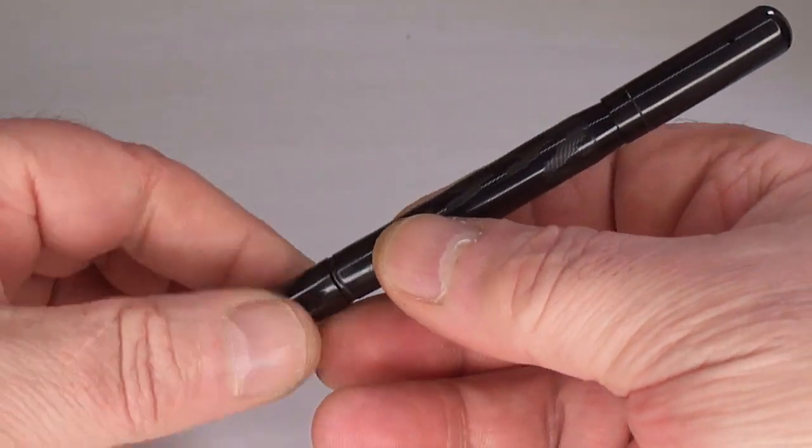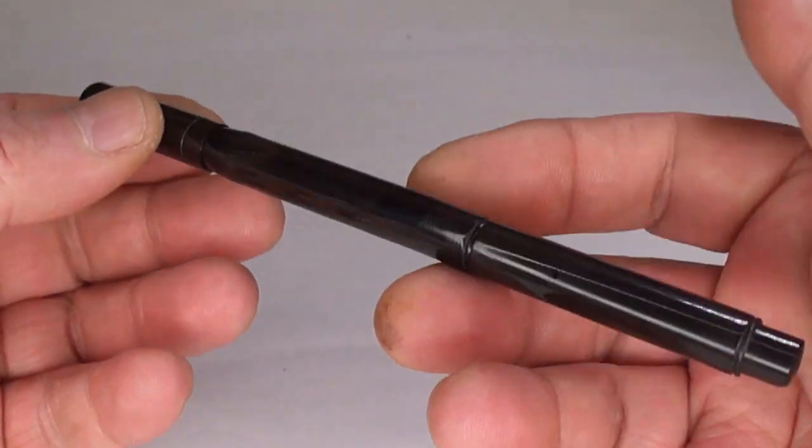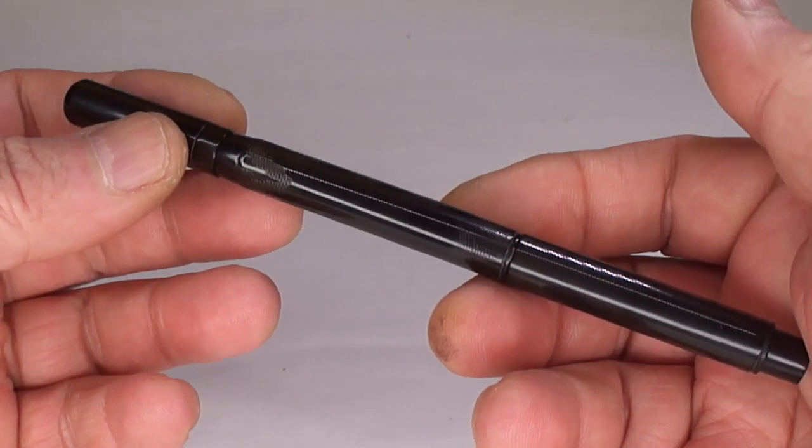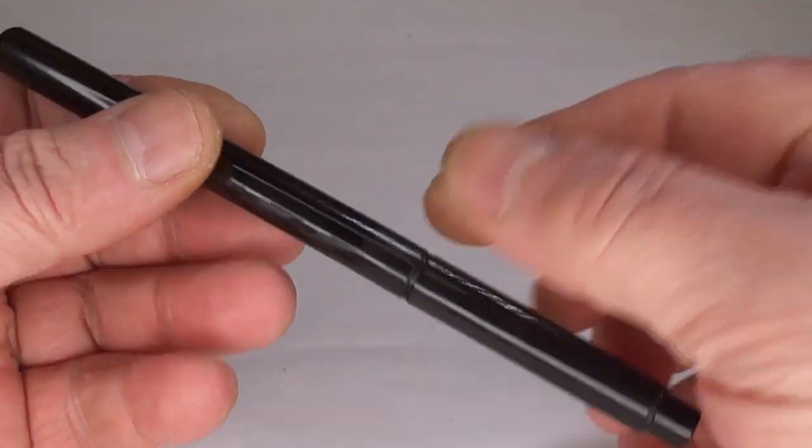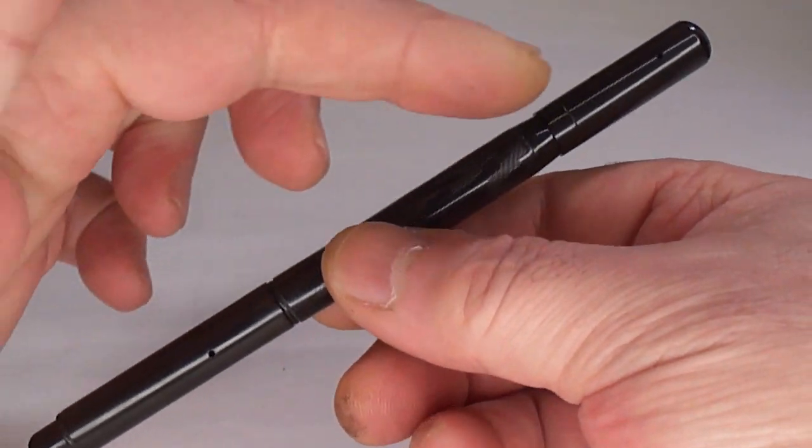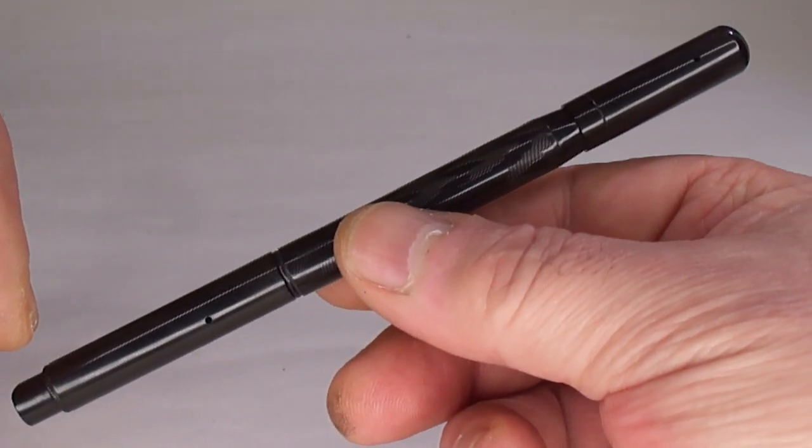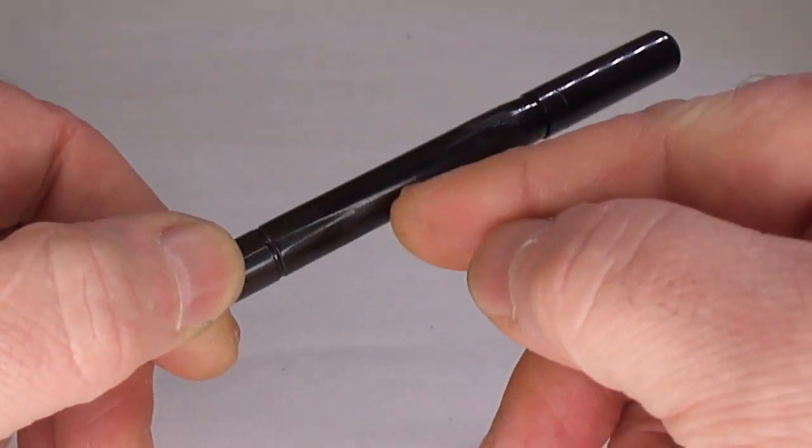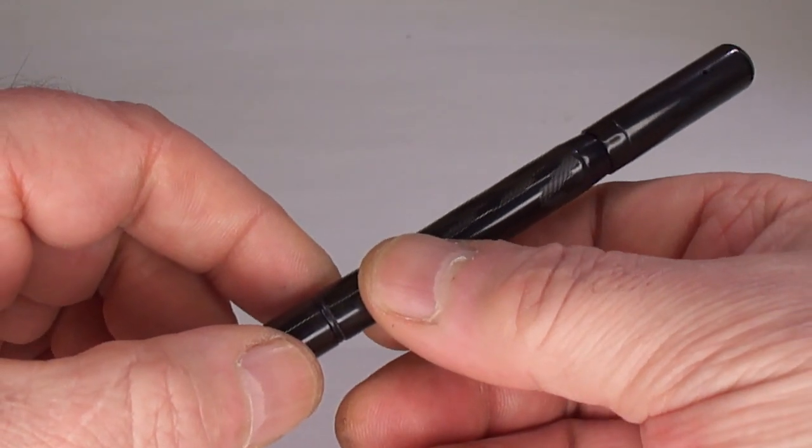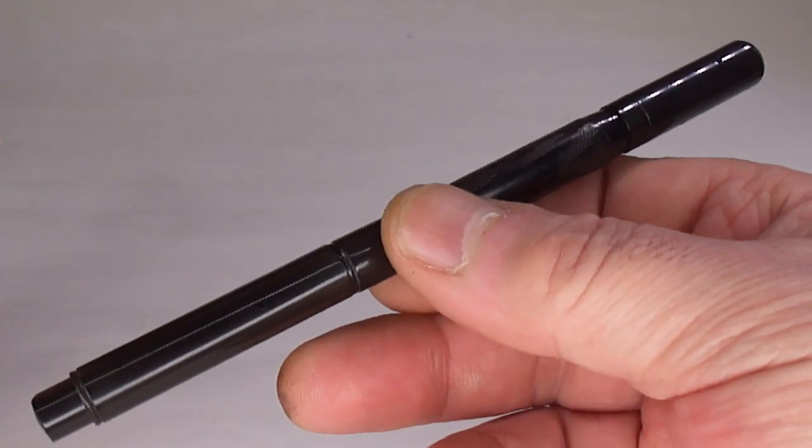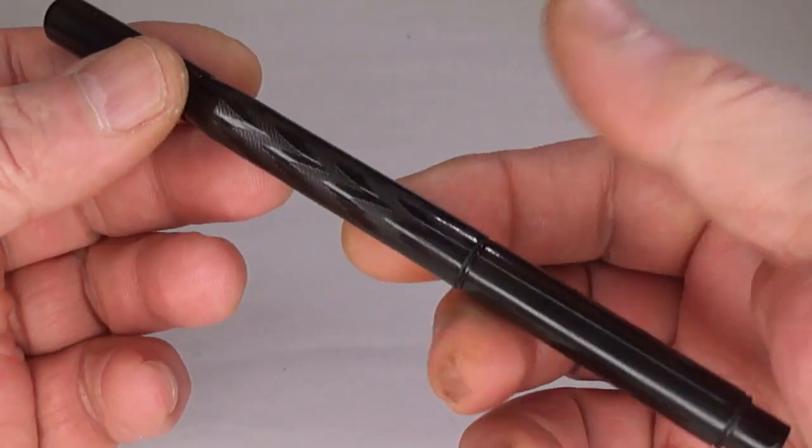Although this pen I believe to be from very early 1900s, maybe around 1906, WH Smith as a company are still going strong. It's the WH Smith self-filling pen. It's what we term as a syringe filler, which I'll show you in a moment. It's quite a long pen. Capped, it's around 152 millimeters, and the diameter is 10 millimeters.